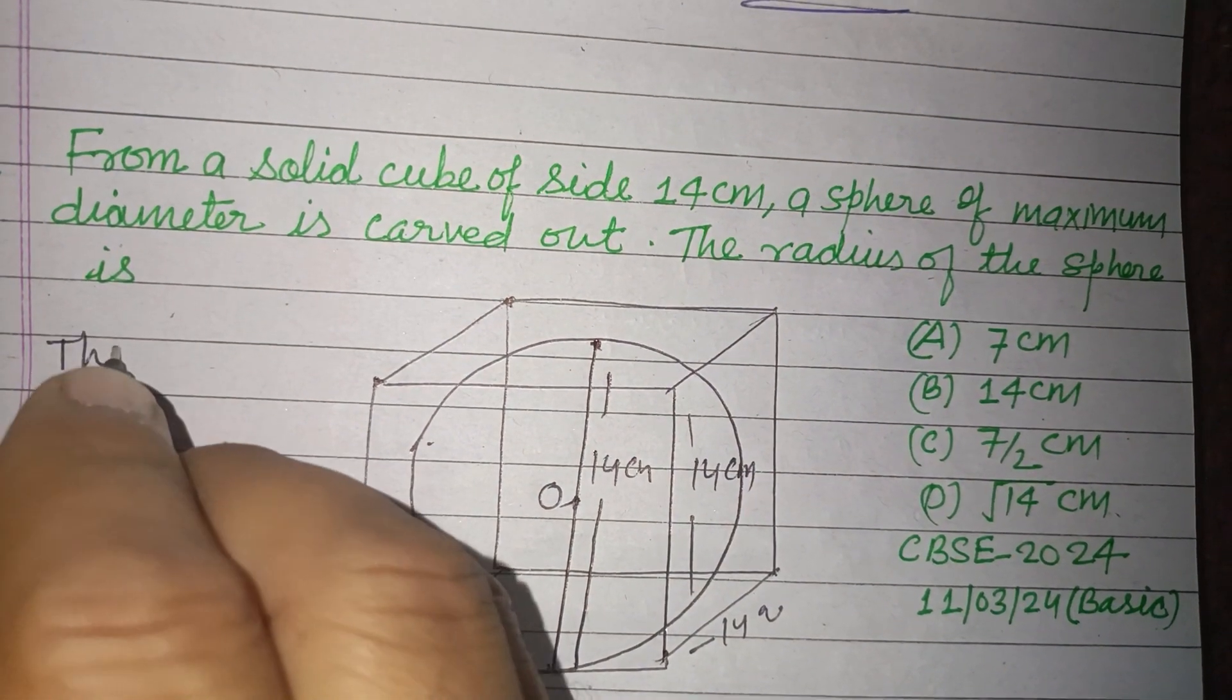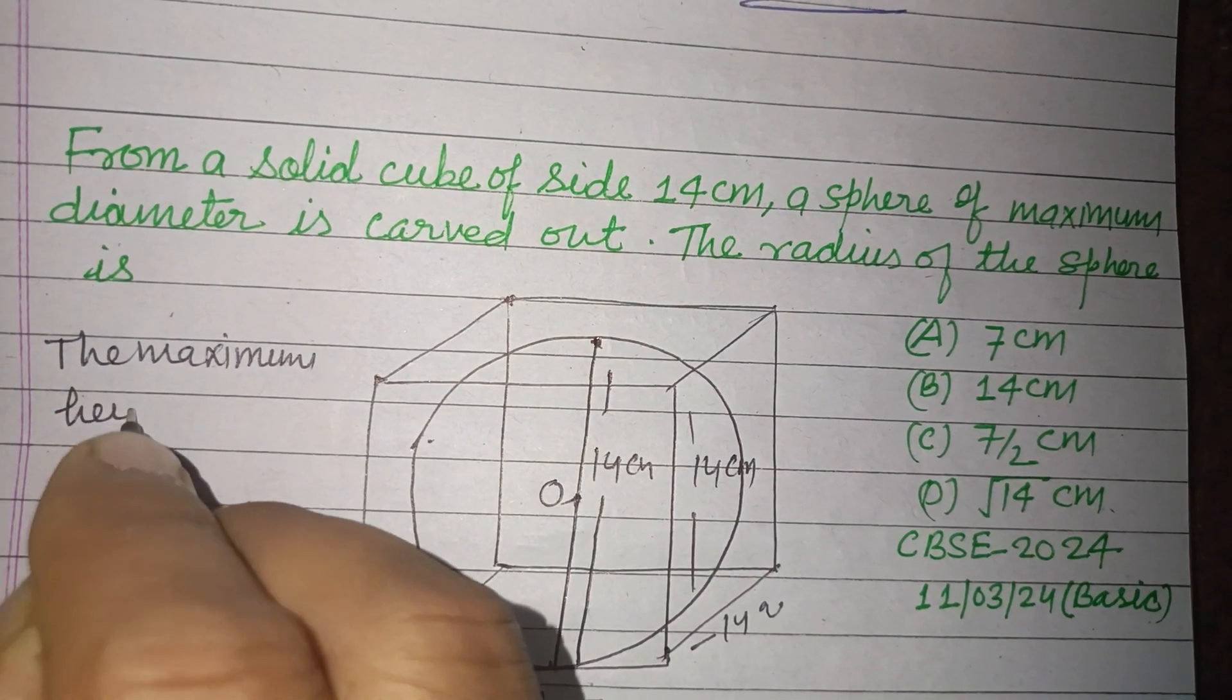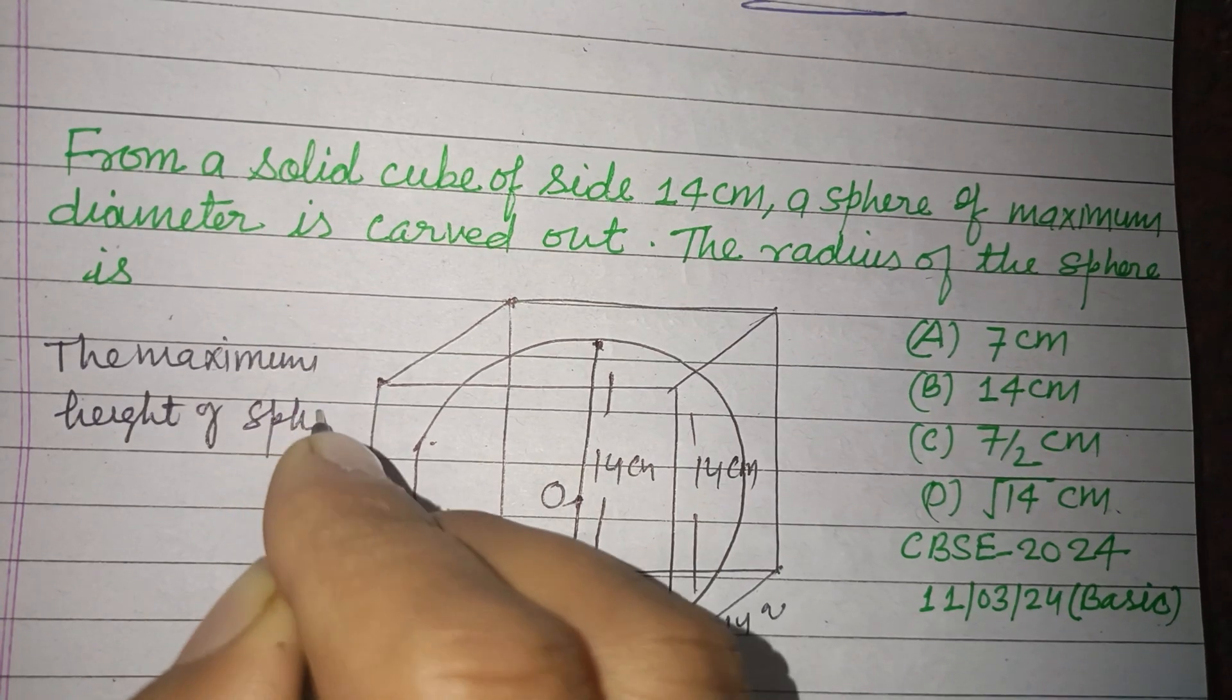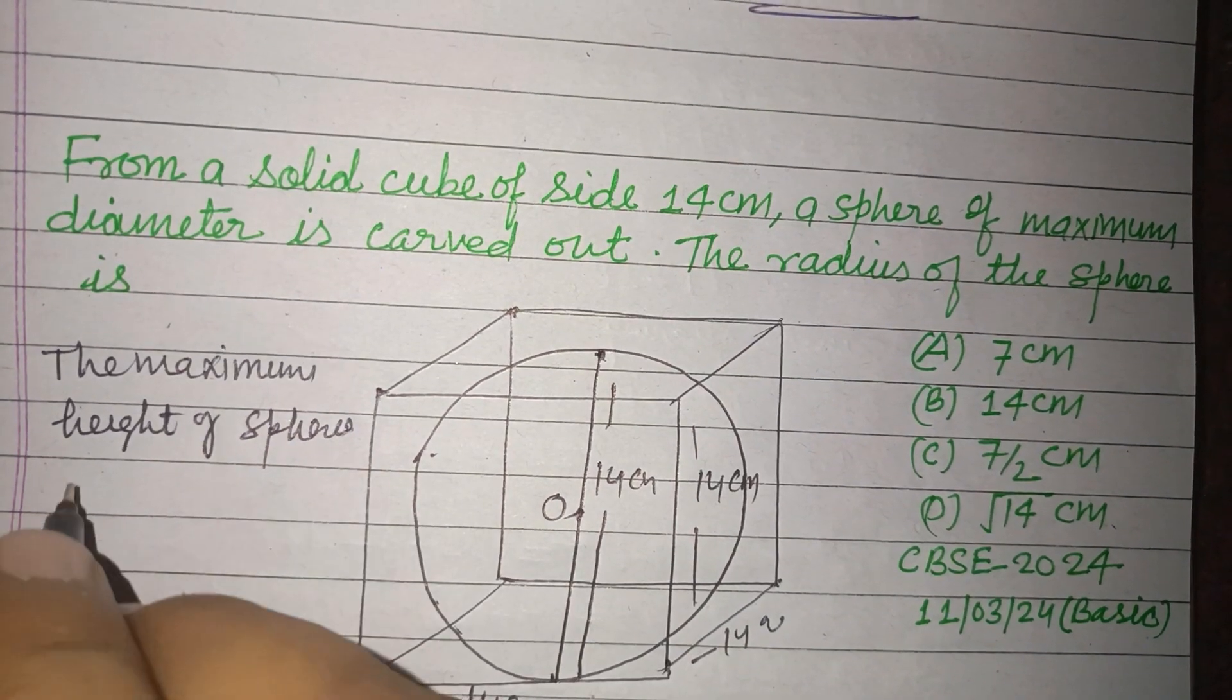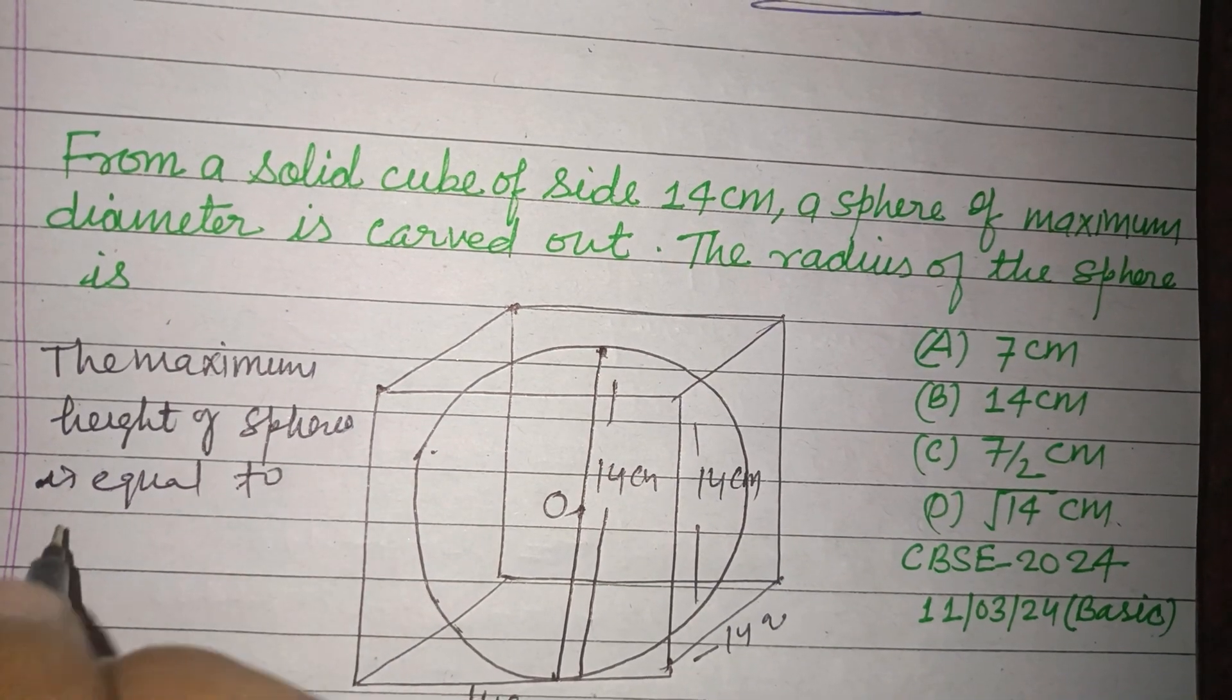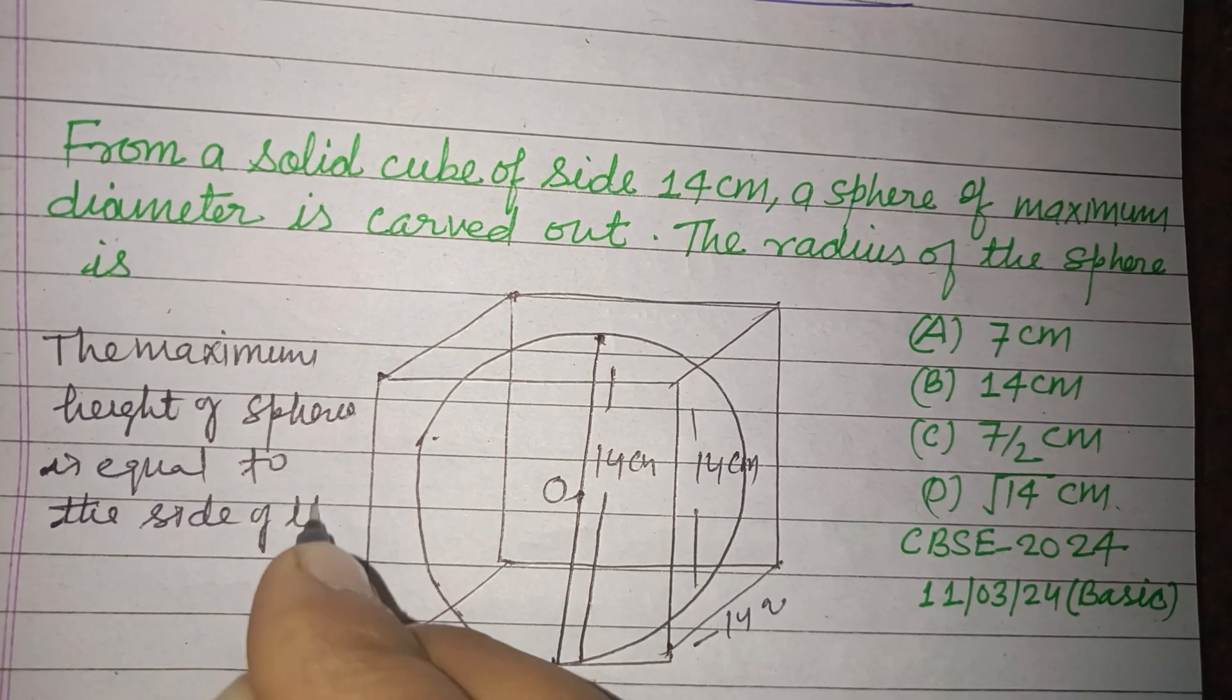The maximum height of the sphere is equal to the side of the cube.